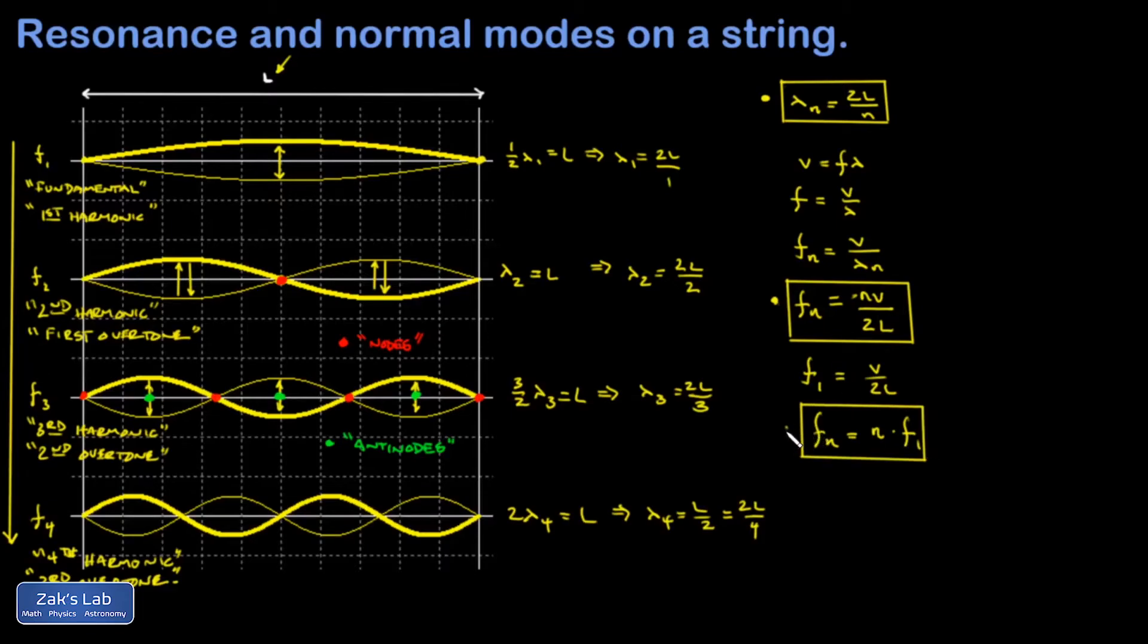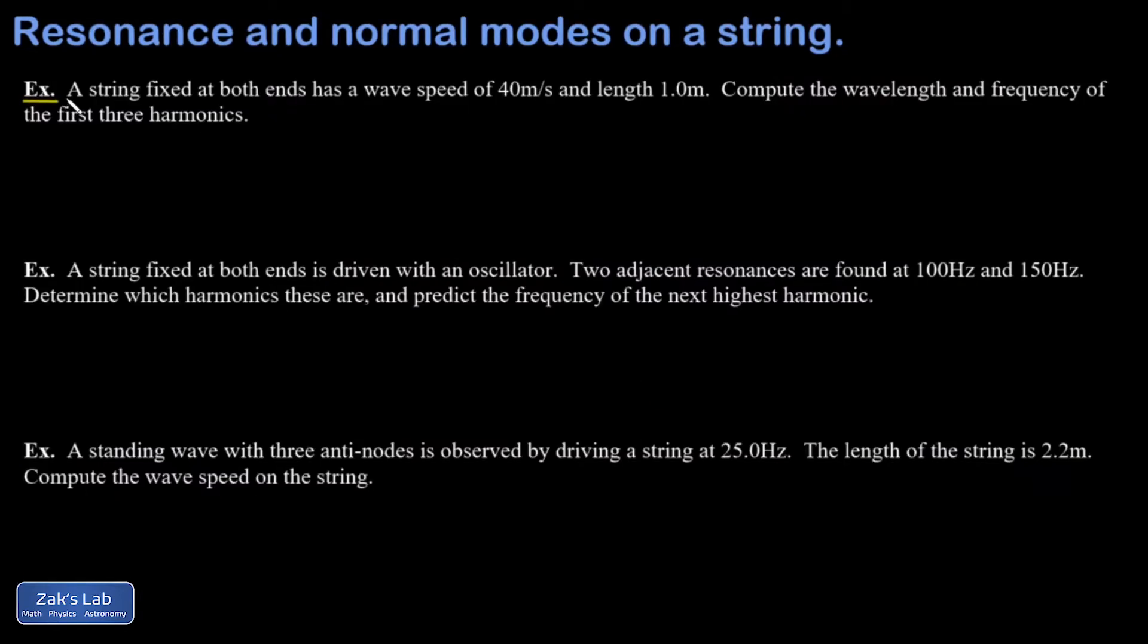That completes our little list of three useful equations for now. And now we can get into some examples. First, a string fixed at both ends has a wave speed of v equals 40 meters per second and a length of L equals 1.0 meters. Compute the wavelength and frequency of the first three harmonics. We just have to keep the picture in mind of what those look like.